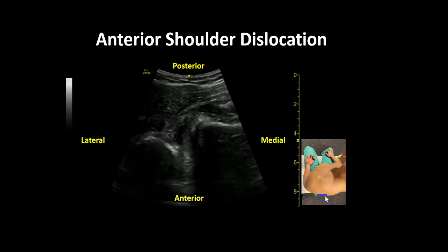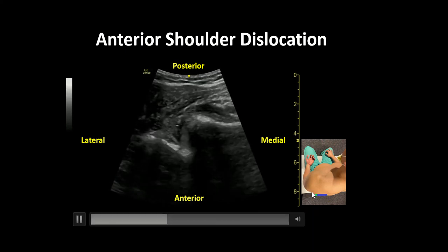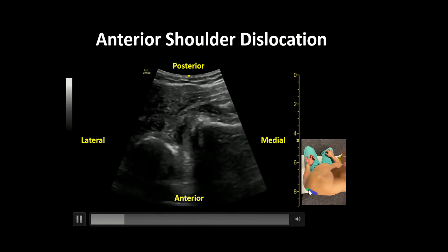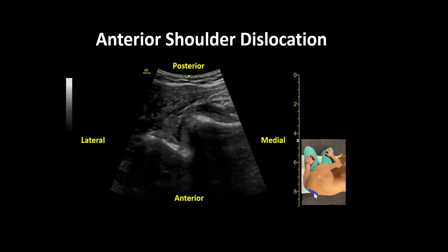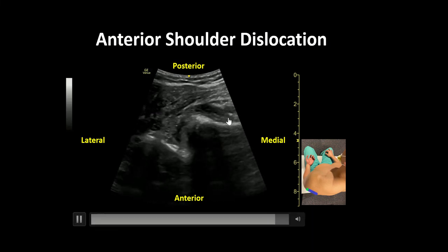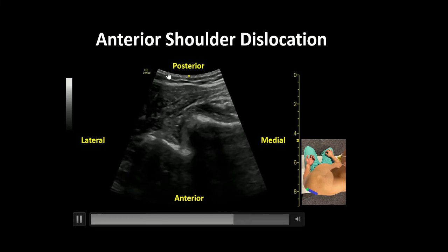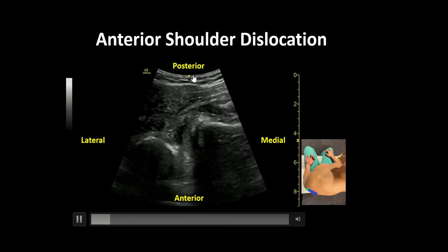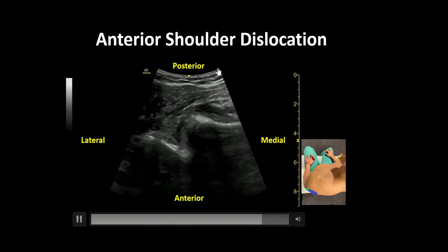The probe is then traced laterally along the scapular spine until the glenohumeral joint comes into view. In this clip we can see that the curvilinear probe is being used, as delineated by the footprint at the top of the screen.